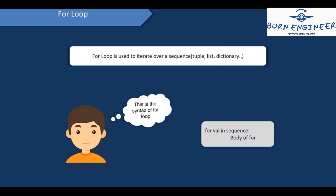Now it's time to work with the for loop. The for loop is used to iterate over a sequence — sequence being your data structures such as tuple, list, dictionary, string and so on. With the for loop you can iterate over a sequence. The syntax is: for val in sequence — for is the keyword, and until the sequence does not end, you will execute the body of the for loop.